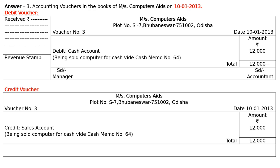And get it signed — the next line, signature of the manager towards the left, SD manager. And towards the right it is SD accountant — signature of the accountant.